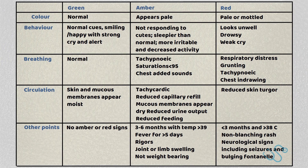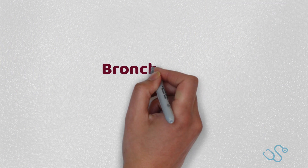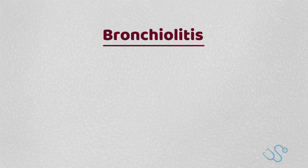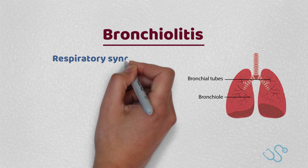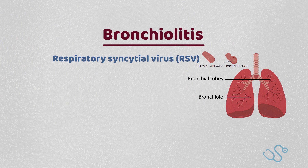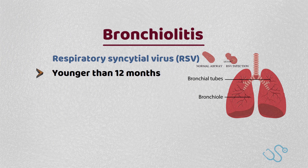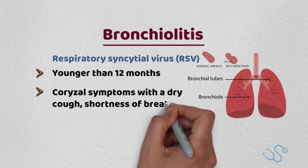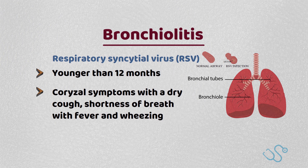Now let's focus on some of the hot topics for exams. The following isn't an exhaustive list but does cover a lot of the common childhood presentations. Starting with bronchiolitis — this is typically caused by the respiratory syncytial virus. It's commonly seen in children younger than 12 months, typically causing lower respiratory tract infections in the winter. They may have coryza symptoms such as a dry cough, shortness of breath with associated feeding issues, and children often have a fever and some wheezing.